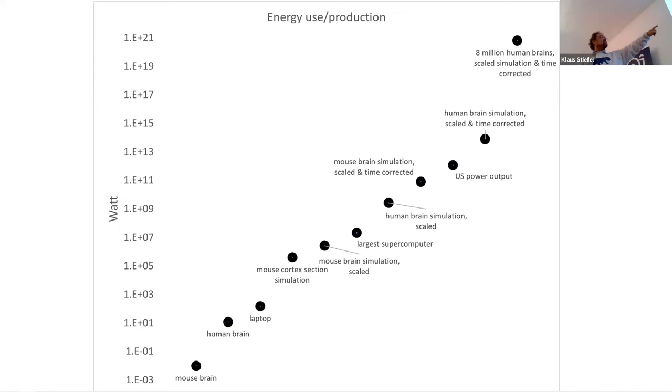And then, you know, we have the mouse cortex. This is what the human brain project is doing, right? So, mouse cortex section simulation. And if we will scale that, right? So, if it would make it that we would have the whole mouse brain immediately the energy requirement would go up. Then, we have the largest super computer.